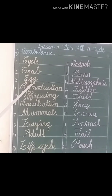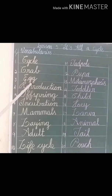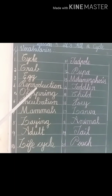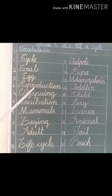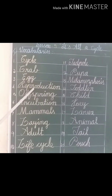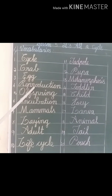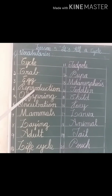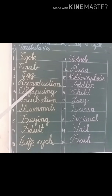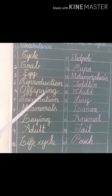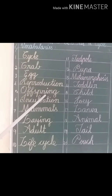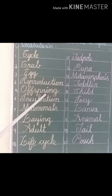Egg — it is an almost round object which contains an embryo. Reproduction — it means the process of producing babies or eggs. Offspring — it means the young of an animal.